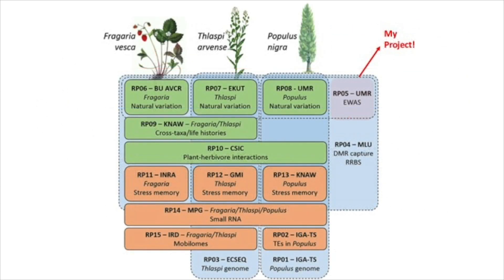The developed software related to my project will be applied to study a large set of epigenetic data collected by others in the project. It will be used to understand the epigenetic changes happening in plants from different natural populations, how these changes are inherited after sexual and asexual reproduction, and how they differ in annual and perennial species such as Fragaria vesca, Populus nigra, and Thlaspi arvense.